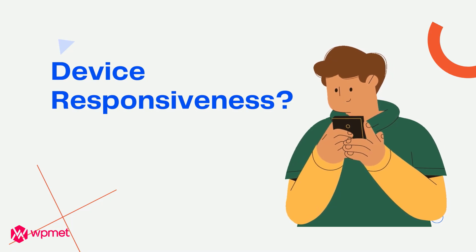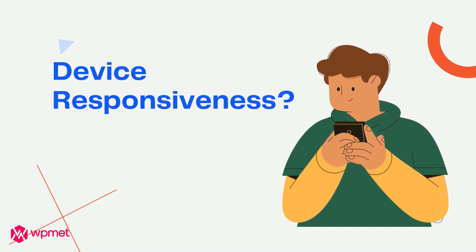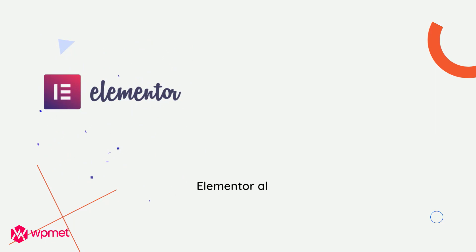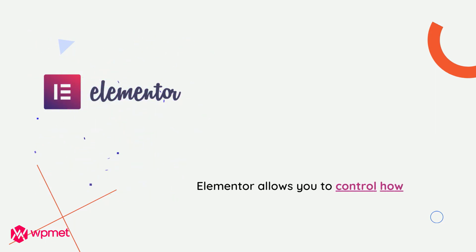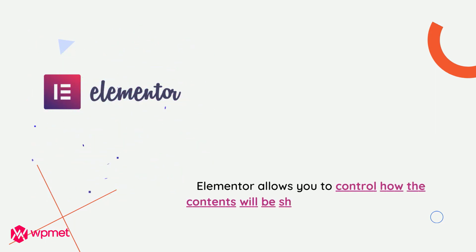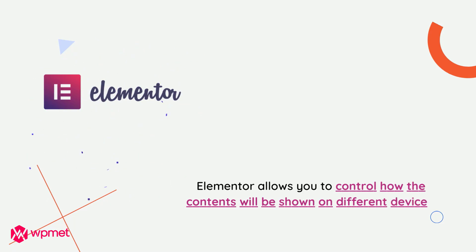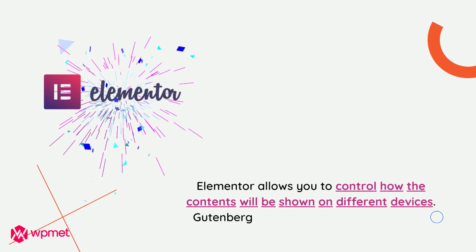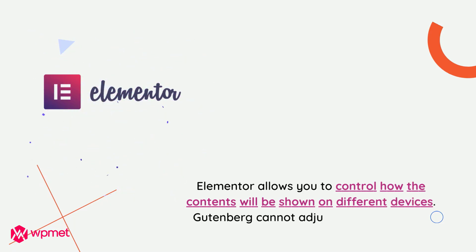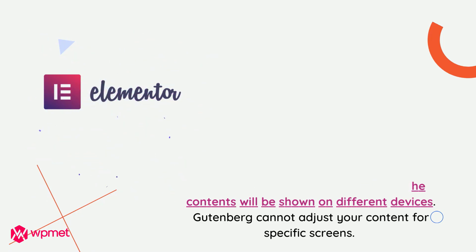Last yet most importantly, device responsiveness. Elementor allows you to control how content will be shown on different devices. On the other hand, Gutenberg can only adjust your content for specific screens.